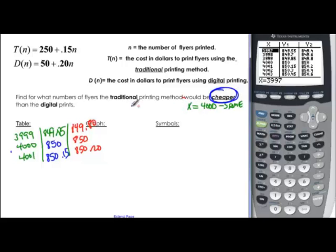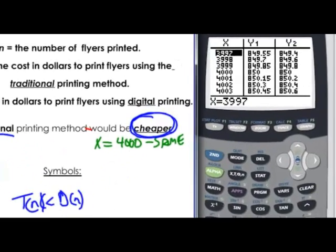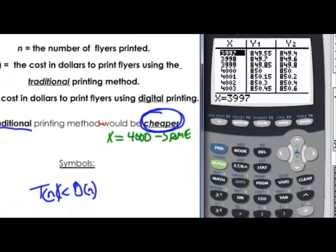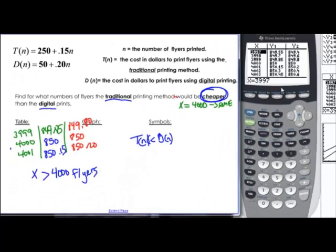So come up here and it's asking us when will traditional be cheaper than digital? Or when will t of n be less than d of n? It'll be less when x is greater than 4,000 copies or flyers.